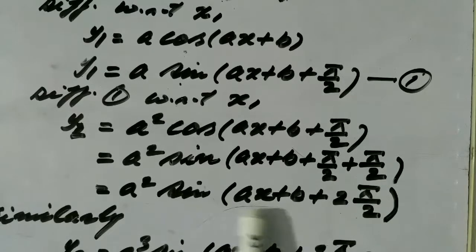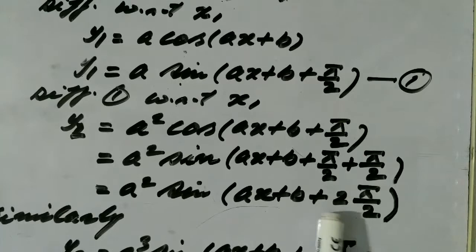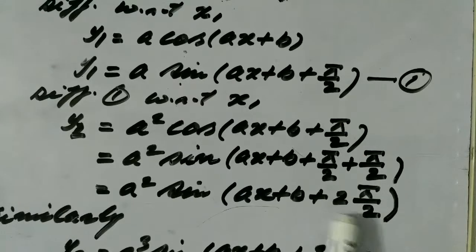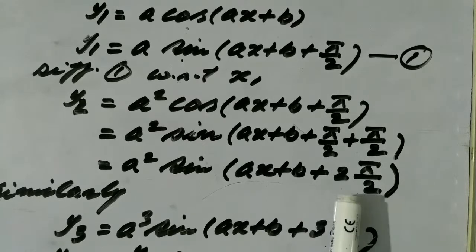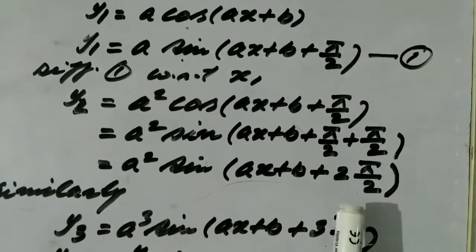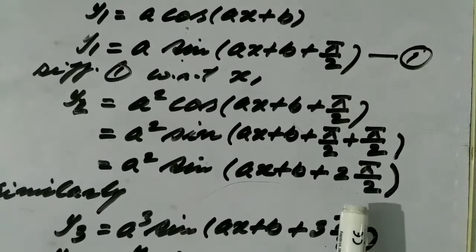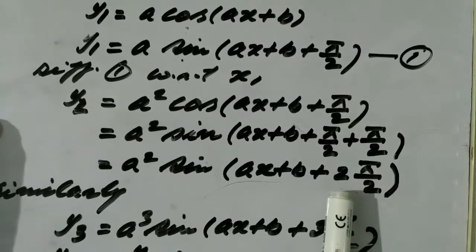We may write it as a squared sin(ax+b+2π/2), and we must not cancel these two, which may be cancelled, but because we have to take the analogy to find out the nth derivative of the function, we should not cancel these two.